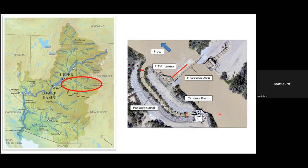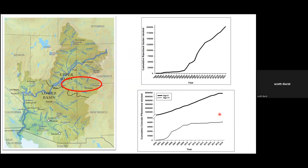Another major activity is a successful hatchery augmentation program that has increased the size of these nearly extirpated adult populations for both endangered fish. The top panel shows razorback sucker and the bottom shows Colorado pike minnow cumulative stocking numbers over time. The stocking effort has greatly increased the adult populations of both. Both fish reproduce in the wild regularly, but we're still having trouble completing that last part of the life cycle where adult fish produce offspring that successfully recruit in the wild, and there's lots of ongoing work to alleviate those recruitment bottlenecks.